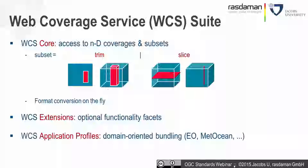Slicing, on the other hand, reduces dimensionality. So from an image time series you could cut out a slice and get something with 2D lat-long coordinates. Or you drill through vertically and obtain a one-dimensional time series that has only a time axis. Additionally, WCS core can do a format conversion on the fly to give you back any requested format.